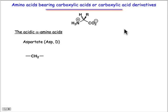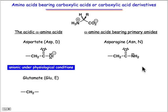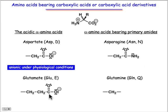There are also acidic side chains, which at physiological pH are in their anionic form. Aspartate has a carboxylate group attached to a CH2. Its corresponding amide, where the carboxylic acid oxygen is replaced by nitrogen, is asparagine. Glutamate has an additional CH2 followed by the carboxylate group — one more CH2 than aspartate. Glutamine likewise has that additional CH2, with the oxygen again replaced by nitrogen.